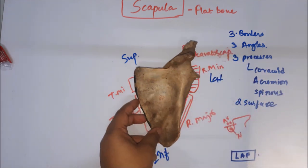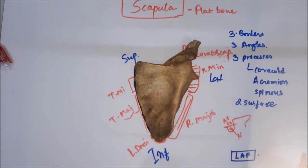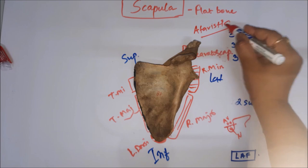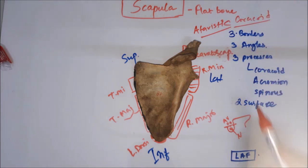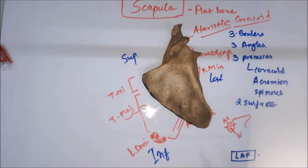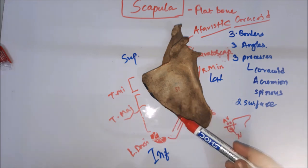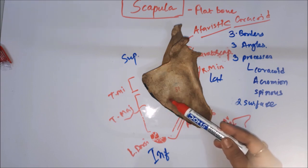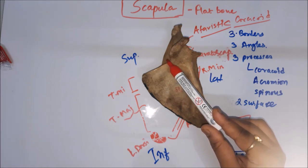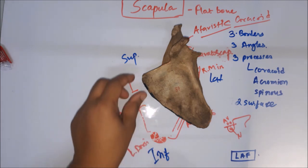A commonly asked question about the scapula: the coracoid process — what type of epiphysis is it? The answer is the atavistic type of epiphysis. Another common question involves nerves and arteries related to the scapula: the circumflex scapular artery passes within the substance of teres major, and the suprascapular nerve and vessels pass through the suprascapular notch. These two structures lying close to the scapula are most commonly asked about.